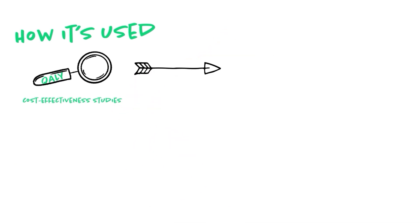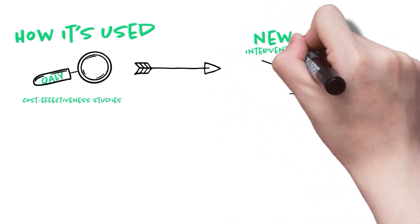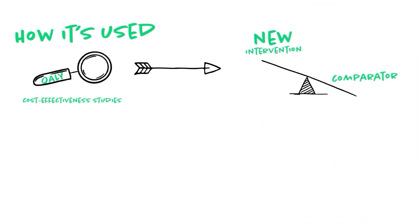Now that you know how to calculate QALYs, we can speak about how it is used in economic evaluations. You mean in cost-effectiveness studies, for example? Yes. In cost-effectiveness studies, we use QALYs to quantify the effectiveness of a new intervention versus comparators, such as standard of care, for instance. That's what we call the QALYs gained.